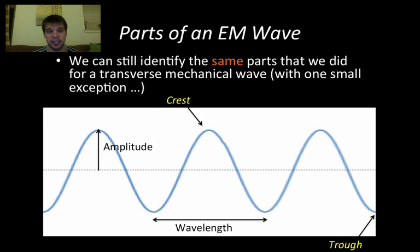As far as the parts of an electromagnetic wave go, we can identify some of the same things that we did on the transverse mechanical wave. An electromagnetic wave is going to have an amplitude, which is the height of the wave above our equilibrium line. It's going to have a crest, which is the high point. It's going to have a trough, which is the low point. It's going to have a wavelength, which is the distance between either two troughs or two crests, the distance of one cycle.